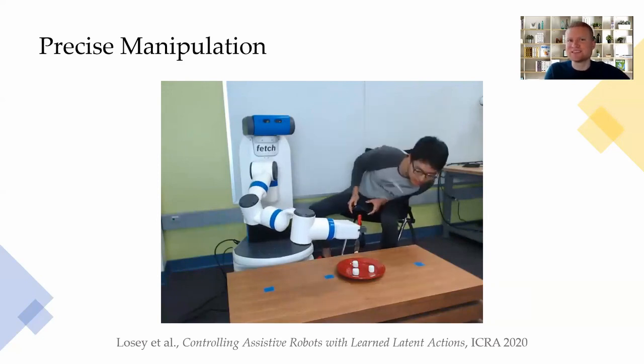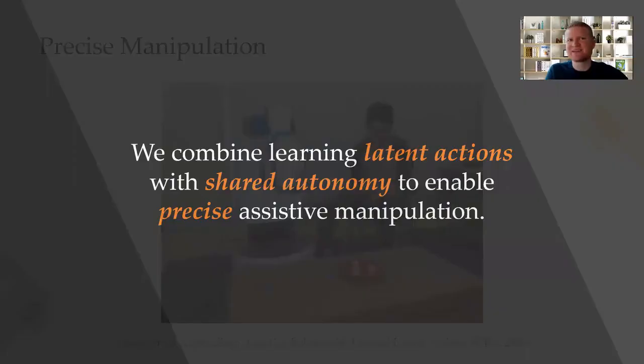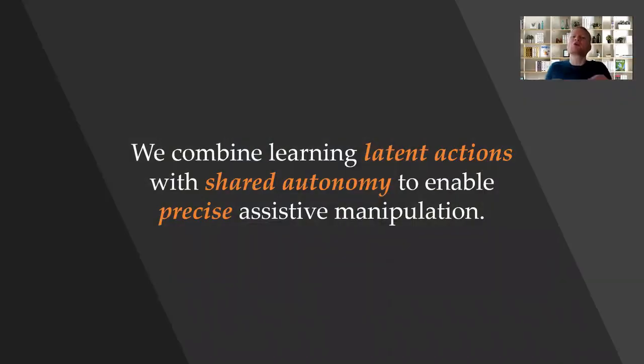But even with this intuitive embedding, precise manipulation is still hard. In this paper, we combine our latent action approach with shared autonomy in order to enable precise assistive manipulation.